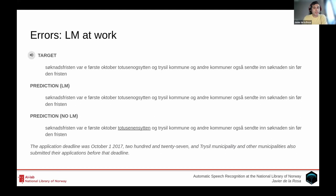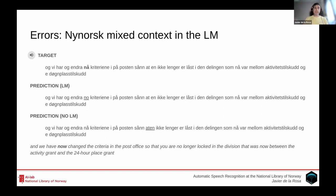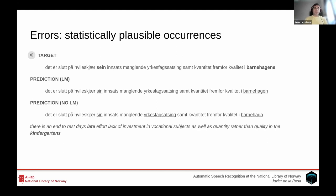We ran an error analysis. There are errors the language model introduces when it has not seen specific n-gram combinations, so it fixes things in the wrong way. Sometimes the model introduces errors, but the good news is it fixes more errors than it introduces. Because the data mixes Bokmål and Nynorsk, we found that when Nynorsk context appeared, the model struggled to continue producing text in Nynorsk and sometimes switched to producing text in the incorrect language. There were also statistically plausible occurrences that sound very similar to the ear.